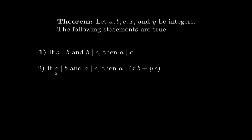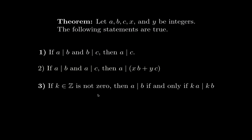The second property is: if the same number a divides two numbers b and c, then a also divides any linear combination xb plus yc of b and c. The third property is: if k is a non-zero integer and a divides b, that is equivalent to saying ka divides kb — so you can multiply both sides by k, as long as k is not zero.